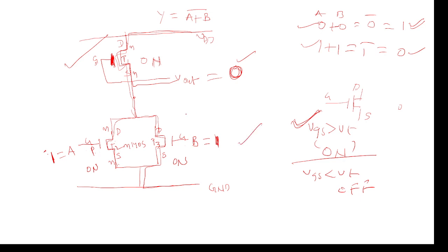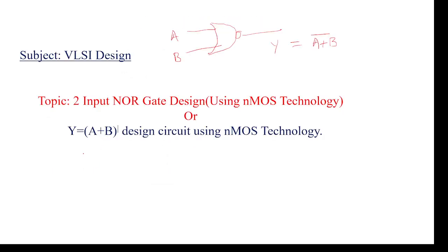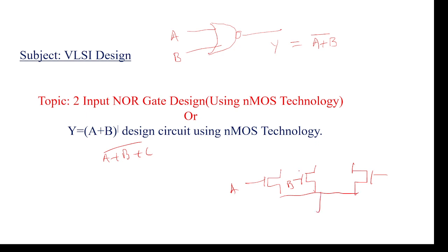Similarly, the remaining two output cases can be verified. The top transistor is named the pull-up transistor, and the bottom transistors are named pull-down transistors. The pull-up transistor always tries to pull the output HIGH, while pull-down transistors try to pull the output LOW. All three transistors are NMOS only, which is why it is named an NMOS-designed two-input NOR gate. For A plus B plus C whole bar, we can use three transistors in parallel in the pull-down network, with a single depletion-mode transistor as pull-up. Like this, we can design any number of logic gates.